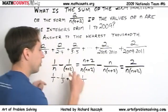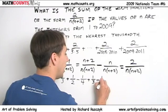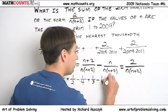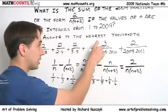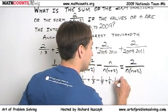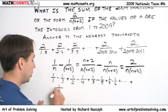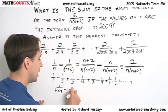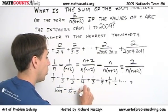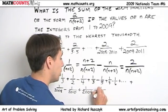Fantastic! Do it for the next one. 1 over 3 minus 1 over 5. And the next one will be 1 over 4 minus 1 over 6. And we'll just keep on going. We'll get to these last two terms, which will have 1 over 2008 minus 1 over 2010 plus 1 over 2009 minus 1 over 2011.